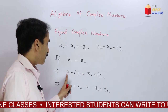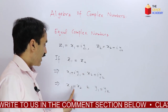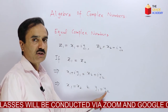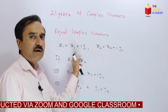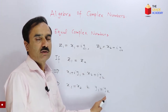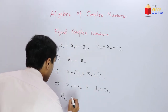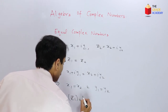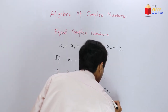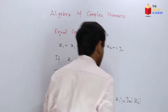It means the real part of the first complex number is equal to the real part of the second complex number, and the imaginary part of z1 is equal to the imaginary part of z2. For any two complex numbers to be equal, their real parts and imaginary parts must both be equal.